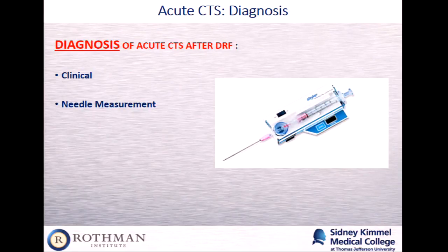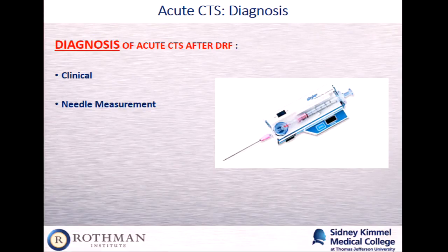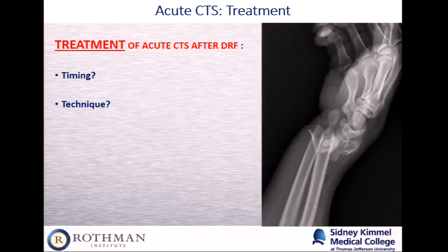How do you diagnose it? If someone has a distal radius fracture and is complaining of progressive numbness and tingling in the thumb, index, and middle fingers that is bothersome and even painful — you can place a Stryker needle to measure pressure if you want, but for the most part this is a clinical diagnosis based on examination findings, analogous to a compartment syndrome. You can place a needle in, but it's not necessary.